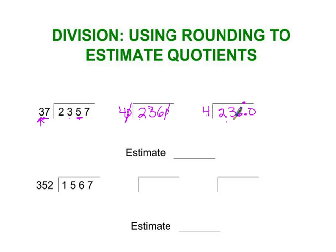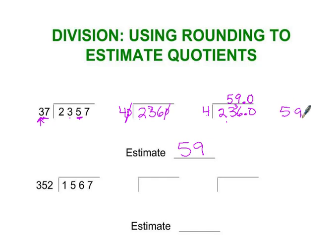So 4 goes into 23 — how many times? 4 times 5 is 20, that's a remainder of 3. Then 4 goes into 36, 9 times. 9 times 4 is 36, so we have no remainder, nothing left over. And my estimate is 59. If I had gotten an answer like 59.6, I would write 60 instead.